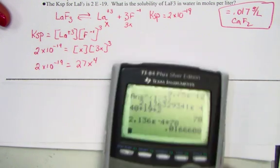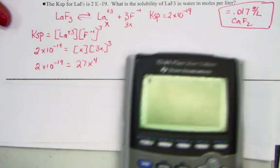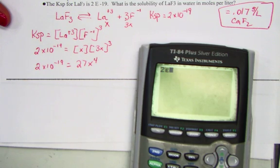Let's hit with our calculator, pulling out x. 2e negative 19 divided by 27. Sets that equal to x raised to the fourth power. So let's take that answer and raise it to 1 fourth power, pulling out just the value of x.